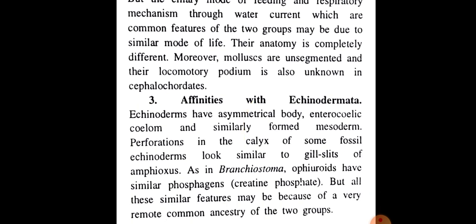As in Branchiostoma, Ophiuroids have similar phosphagens or creatine phosphate. But all these similar features may be because of very remote common ancestry of the two groups.